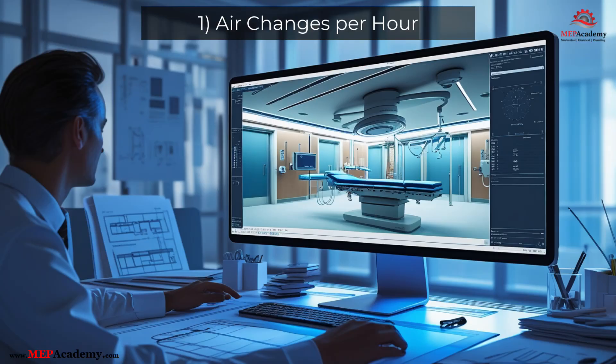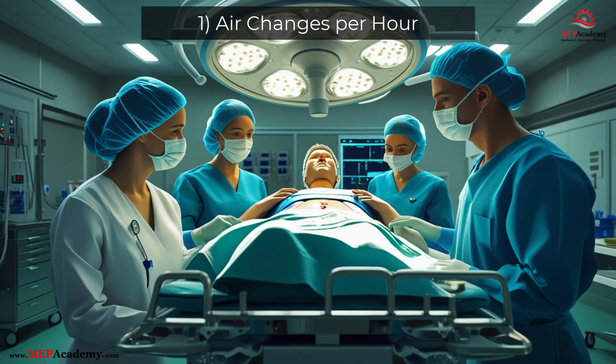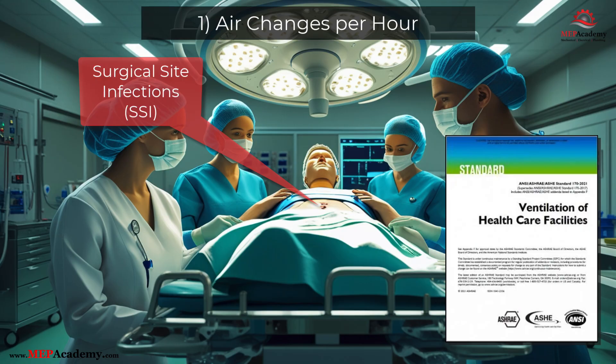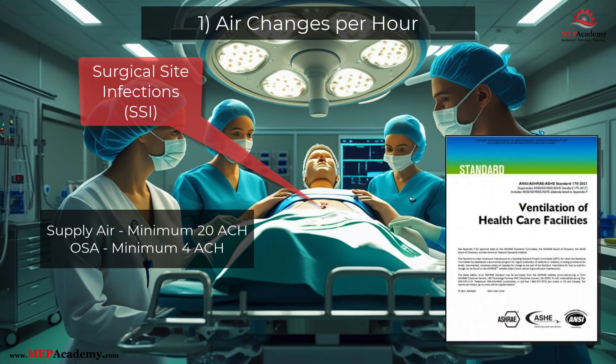Takeaway 1: Air Changes Per Hour. The primary purpose of an operating room HVAC system is to reduce the risk of surgical site infections (SSIs) by controlling airborne contaminants and maintaining a clean, stable environment. According to ASHRAE Standard 170-2021, an operating room must meet the following minimum conditions: air changes per hour shall be a minimum of 20 during occupied surgical conditions, with a minimum of four air changes per hour for outdoor fresh air.